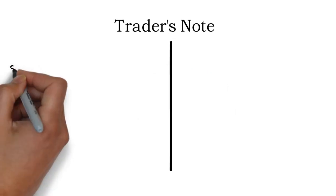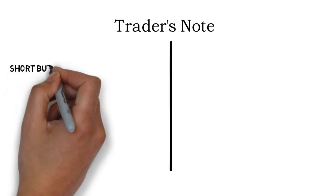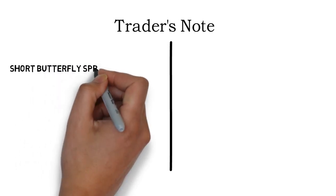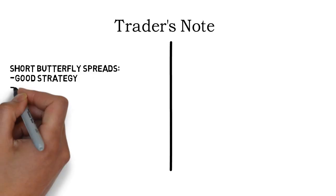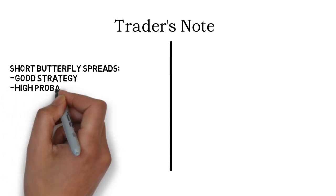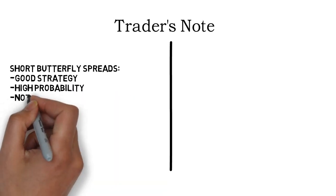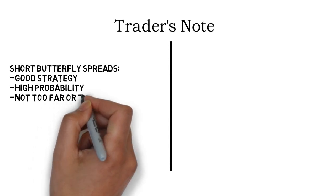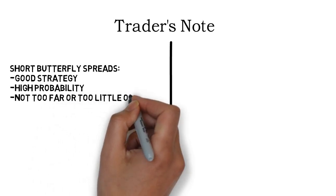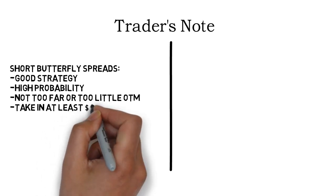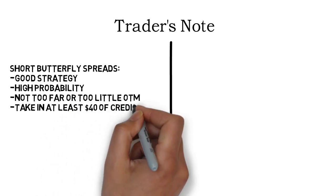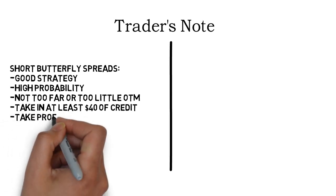Before we finish I want to present some tips and a brief recap on both strategies. Short butterfly spreads are in my opinion a good strategy, especially due to the high probability aspect. Most other high probability option strategies are range bound strategies, and short butterfly spreads aren't — I find that quite interesting. When setting up butterfly spreads I recommend not picking strikes that are either too far or too little out of the money, as this can impact the probability of profit or the credit taken in negatively. You should always take in a credit when opening this strategy, and that credit shouldn't be too small — I have $40 as a minimum credit as a rule of thumb.